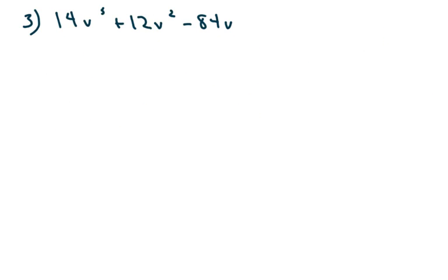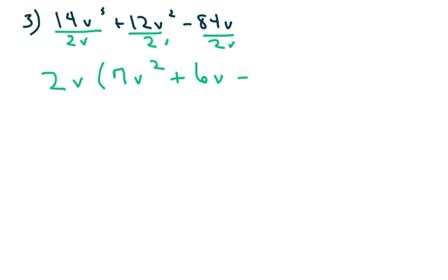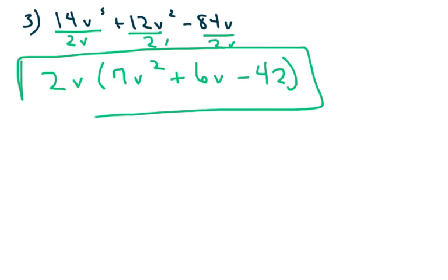The next one, I'm going to factor out a 2 and a v, because I can divide this by 2v. So I'm going to factor out the 2v and get 7v squared plus 6v minus 42. From here, I can try to factor this but it's not going to factor any more. So that would be my answer. The only way you could get solutions to this, if it was set to 0, is to use the quadratic formula.